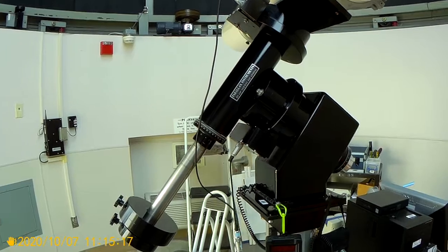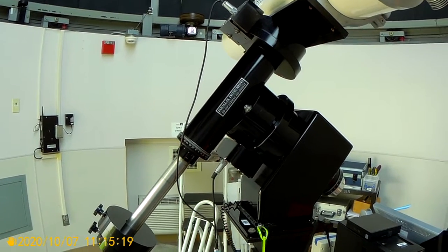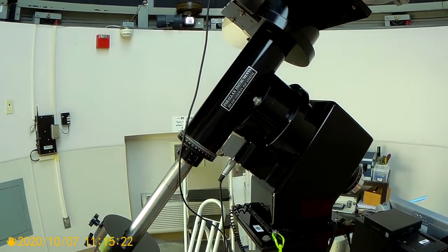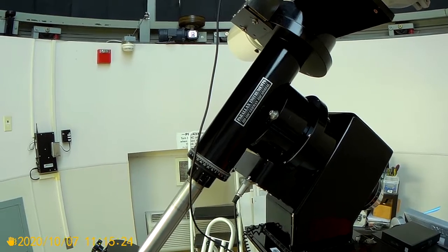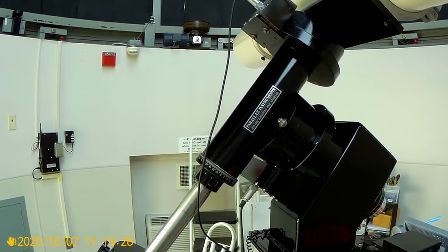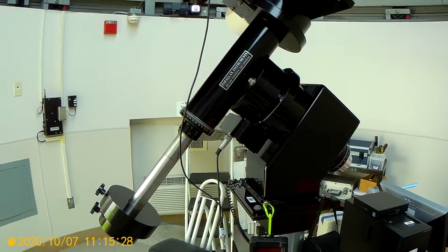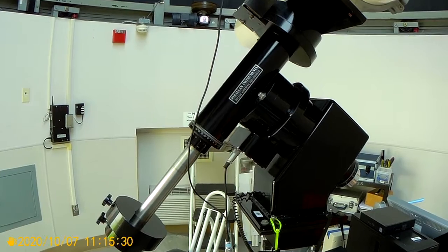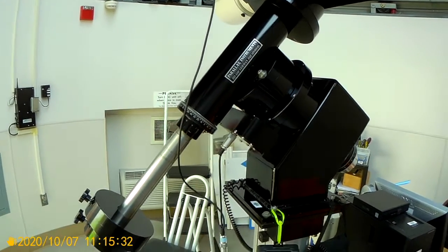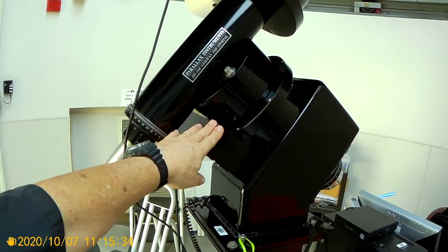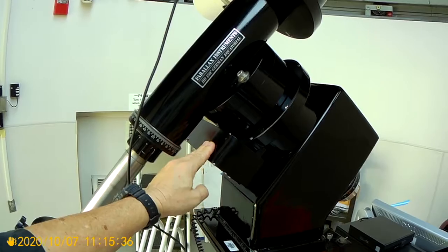Alright, the next item is the German equatorial mount that guides the telescope through the night sky on objects that we wanted to look at or image. It has a motor here. That's the right ascension motor assembly. And this is the declination...